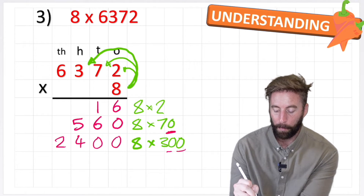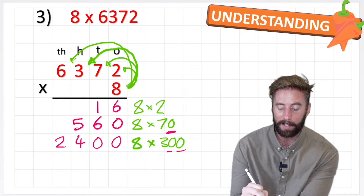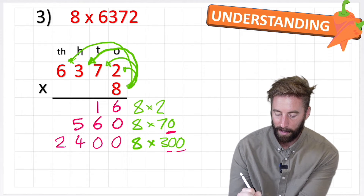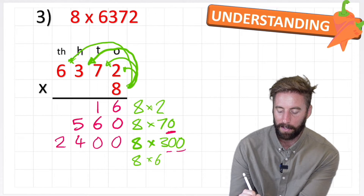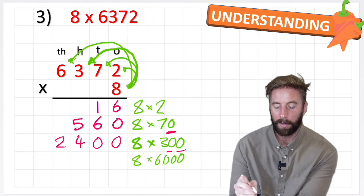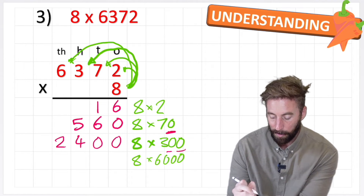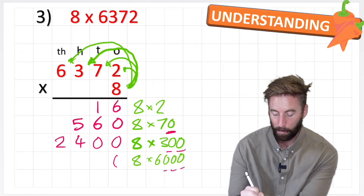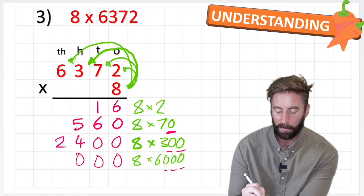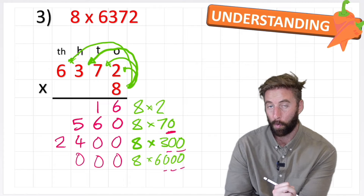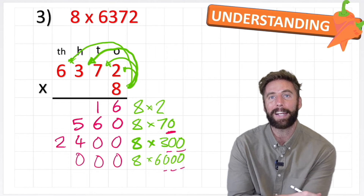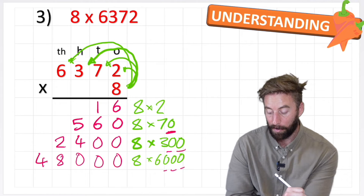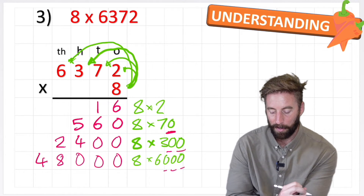Now for the final step: 8 times 6,000. How many placeholders in 6,000? 1, 2, 3. So I put those in place — 1, 2, 3 — and simply ask what's 8 times 6. And 8 times 6 is 48. So my answer to 8 times 6,000 is 48,000.